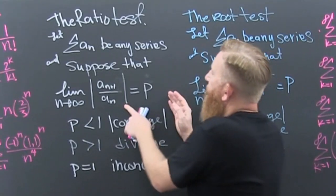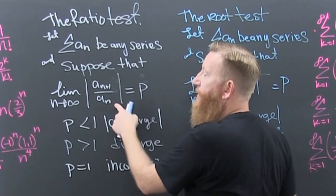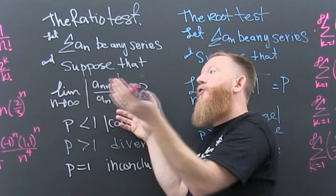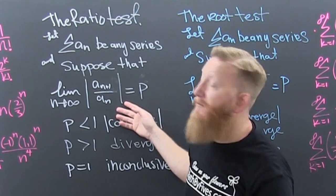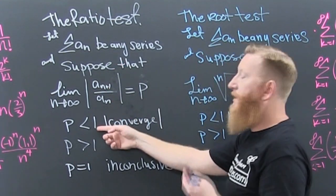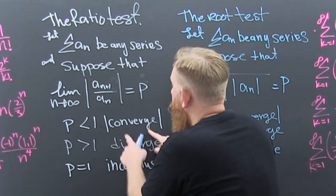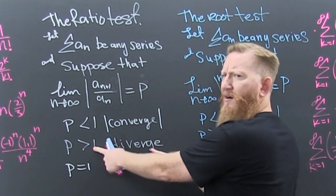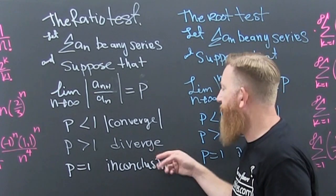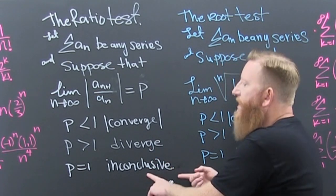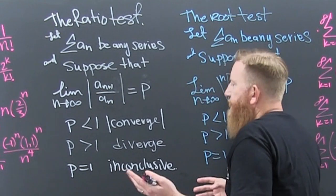That's right. So what are you looking at? You're looking to see whether or not the terms are eventually geometric enough. When does the geometric converge? When the common ratio is less than one. When does the geometric diverge? When the common ratio is bigger than one. Is that all this is? That's all this is. But what about when the common ratio is one? Then that test is inconclusive.